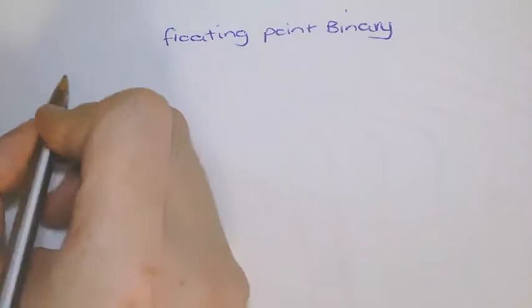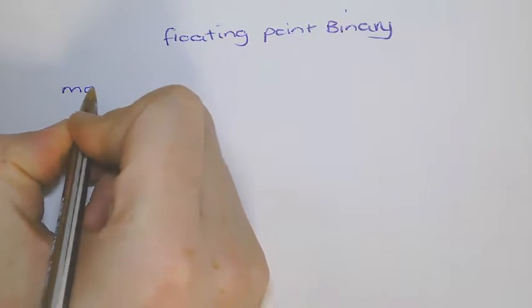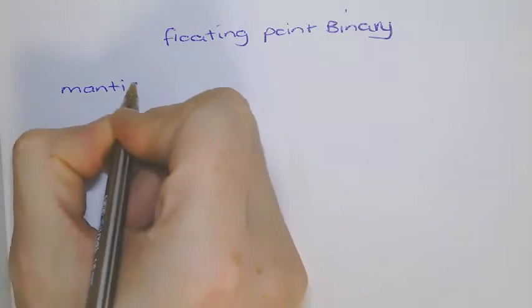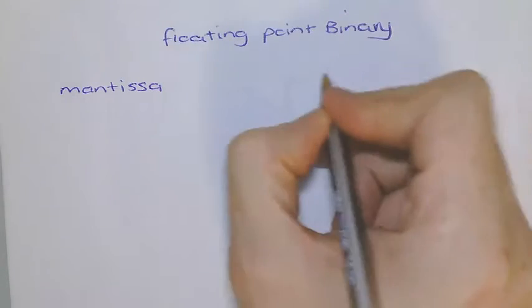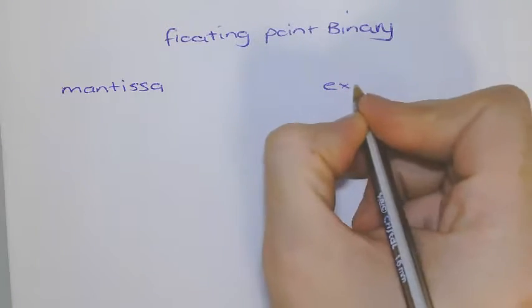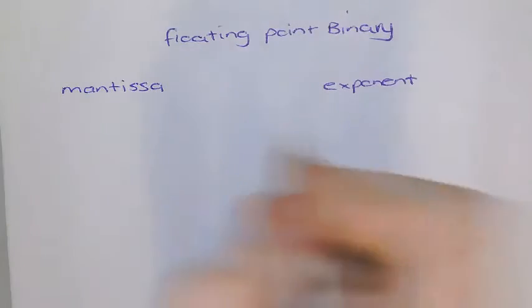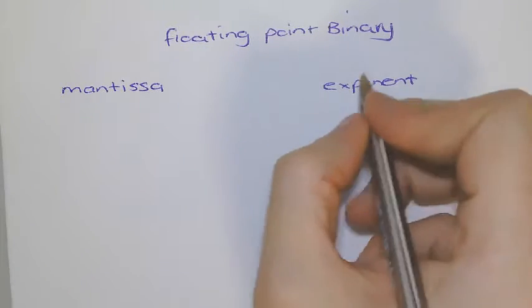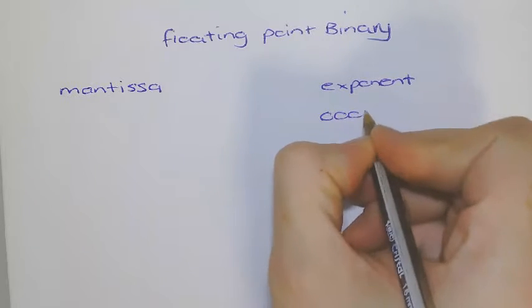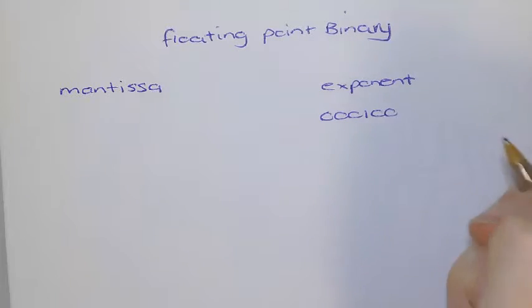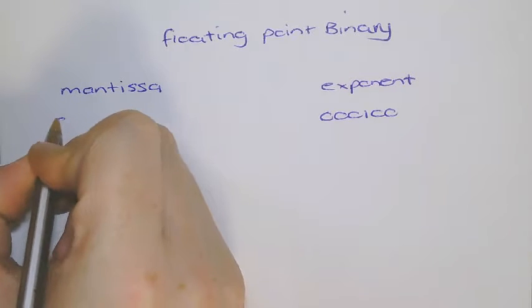Now, the way that floating-point binary works is that you end up with a mantissa and an exponent. So, if we've got a mantissa, if you've done maths before, you may have done this, and an exponent, these numbers are both represented in binary format. So, I would have 0, 0, 0, 1, 0, 0. And in this mantissa,